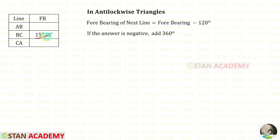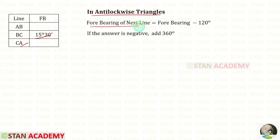Using this forebearing, we can find the forebearing of CA. For that, we can use the formula. If the traverse is in the anticlockwise direction, the formula to find the forebearing of the next line is: forebearing minus 120 degrees. Suppose we have got the answer as negative, then we have to add 360 to the answer.